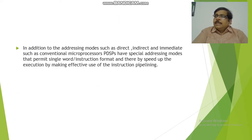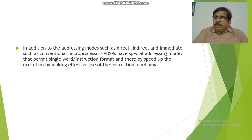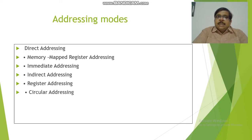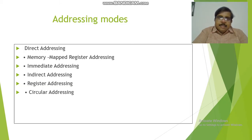In addition to this, the addressing modes used in conventional microprocessors — like direct addressing mode, indirect addressing mode, or immediate addressing mode — there are also specialized addressing modes used in DSP processors for effective use of the instruction pipeline. The way which is used to reach the operand is called an addressing mode. The different types are: memory map addressing mode, direct addressing mode, immediate addressing mode, indirect addressing mode, register addressing mode, and circular addressing mode.